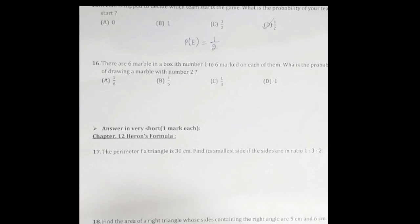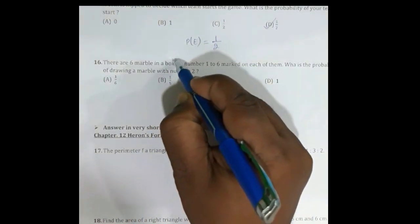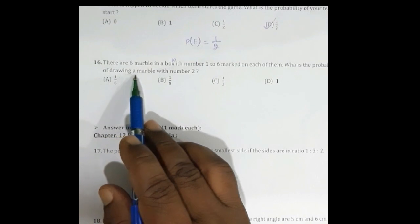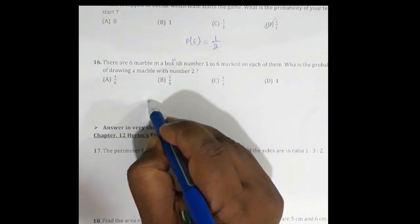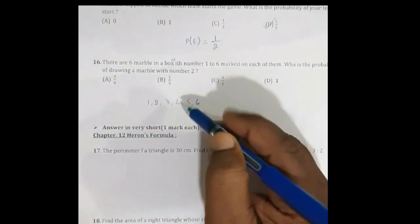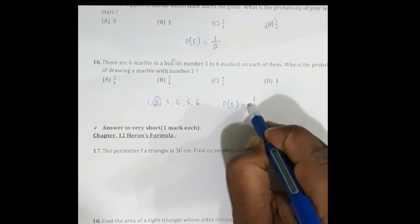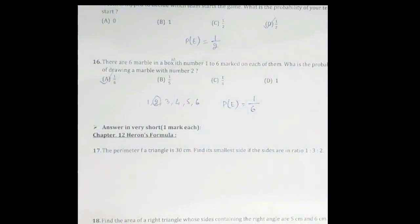Question 16: There are six marbles in a box with numbers 1 to 6 marked on each. What is the probability of drawing a marble with number 2? The marbles are marked 1, 2, 3, 4, 5, and 6. There is only one marble with number 2. Therefore the probability = 1/6. The answer is option A.